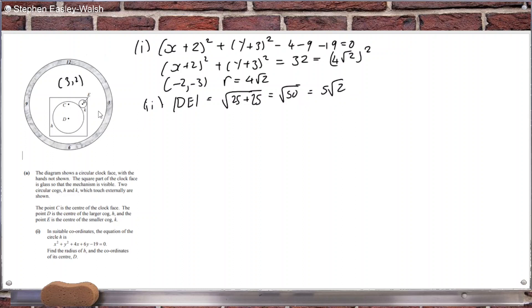√50 is 5√2. So from D to E is 5√2, but the radius of the large circle is 4√2, so the radius of the smaller circle is 5√2 minus 4√2, which is √2.